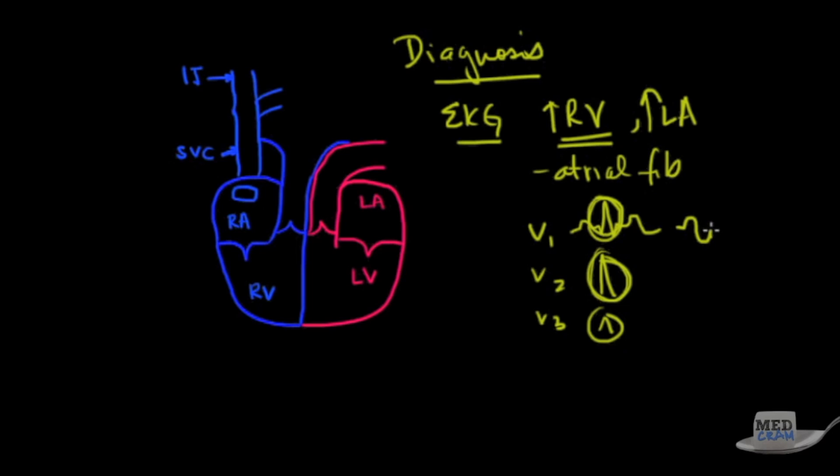In terms of left atrium, look at V1, V2 and you'll notice there's a large up component and then down component before the QRS. If it's more than one small box up and one small box down in the P wave, that shows large left atrial size. Or you could have atrial fibrillation where there won't be any P waves at all.